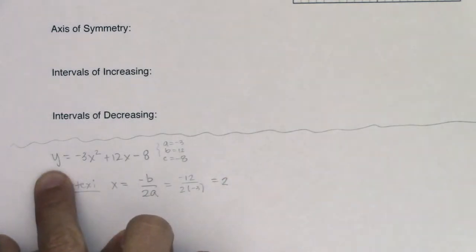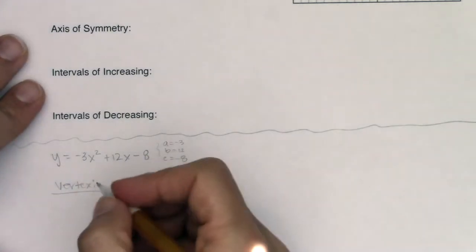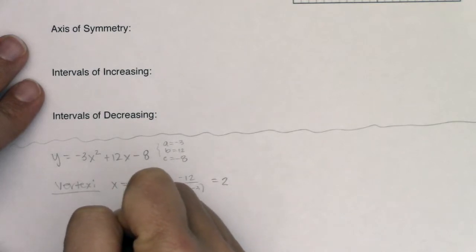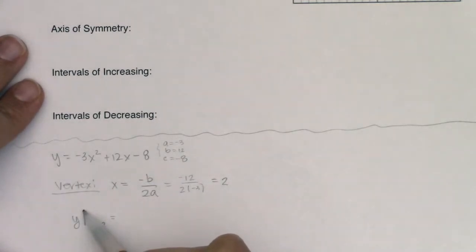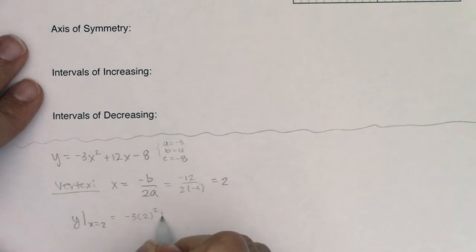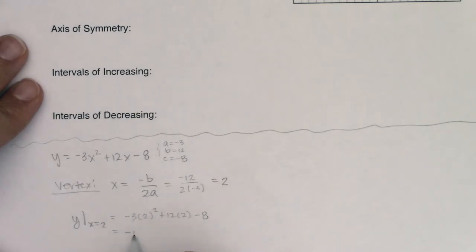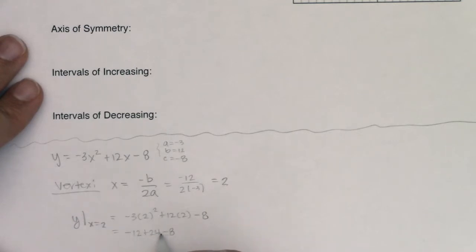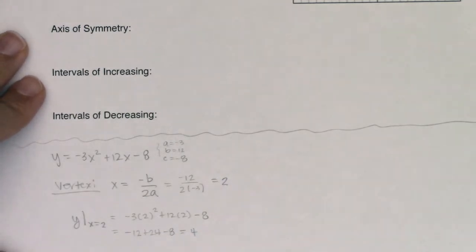To find the y-coordinate, I'll plug 2 back into the y-equals formula. Y evaluated at x equaling 2 — which is like saying f of 2 — would be negative 3 times 2 squared plus 12 times 2 minus 8. 2 squared is 4; 4 times negative 3 is negative 12. Adding 24 and subtracting 8: negative 12 plus 24 is positive 12, and 12 minus 8 is 4. So I've identified my vertex as the ordered pair (2, 4).